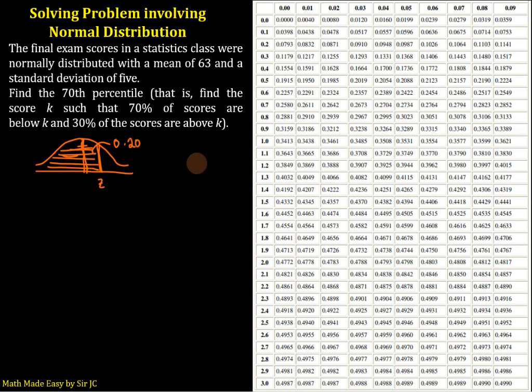What we are going to do is to look for z that has an area closest to 0.20, and that is 0.1985. The difference is 15. This is very close to 0.20, and that corresponds to z equals 0.52.